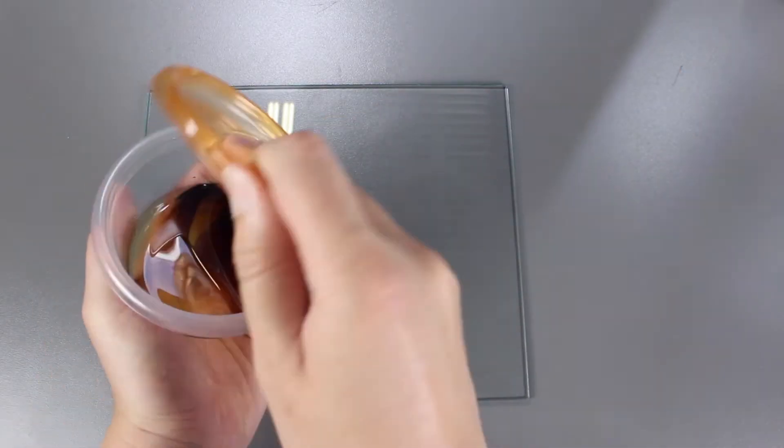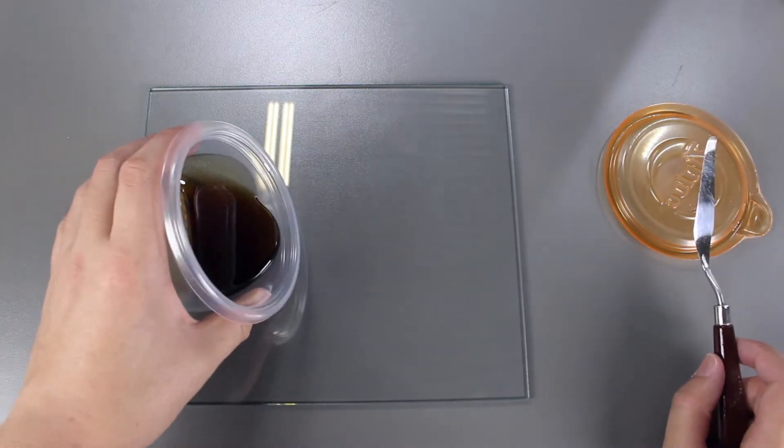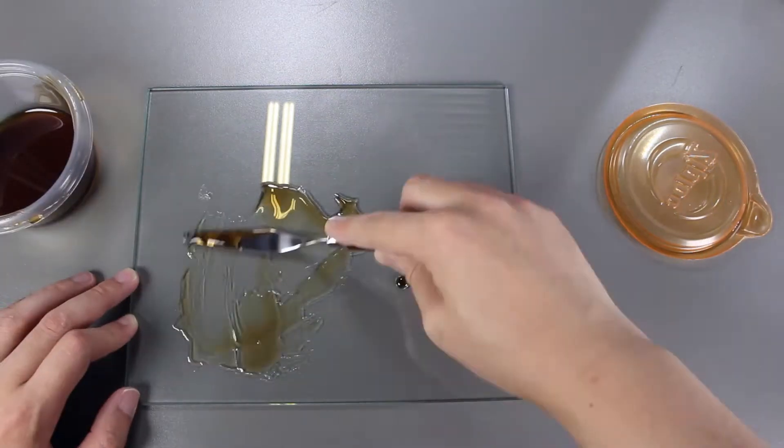Before that, let's pour a small portion of the maple syrup onto the glass bed and then we'll spread it with a print removal knife.